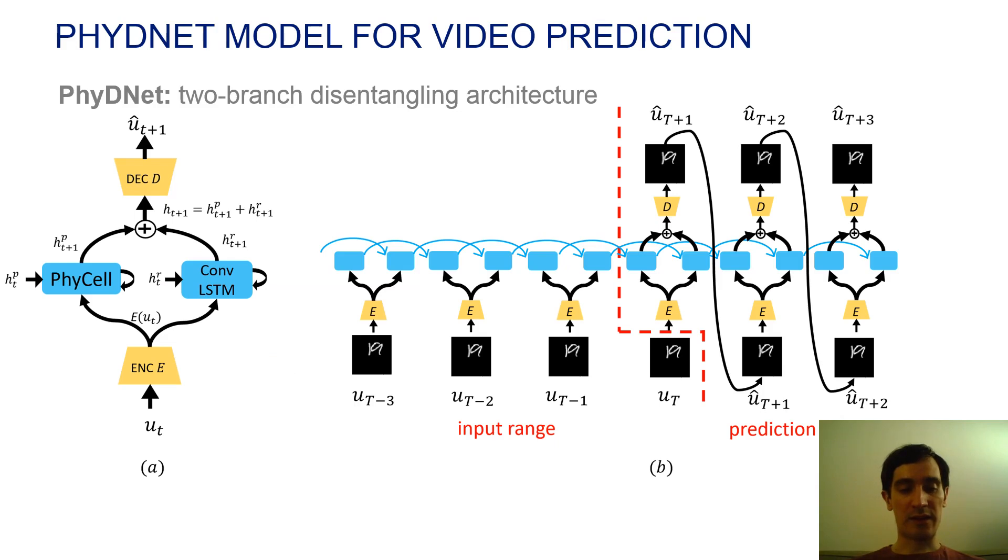PhyDNet is a two-branched architecture that disentangles physical from residual dynamics in latent space. Physics is learned with a recurrent neural network cell called PhyCell, whereas the complement is learned by a data-driven function. When unfolded in time, this forms a sequence-to-sequence architecture for video prediction.